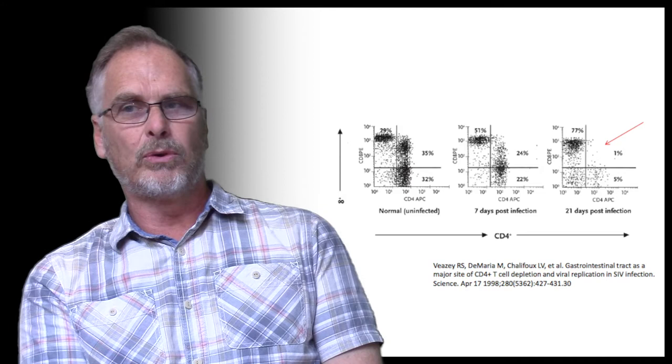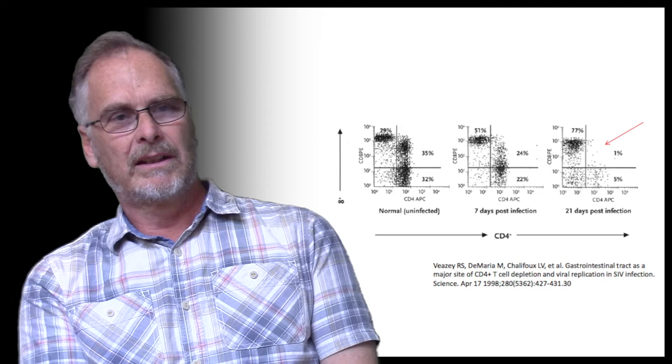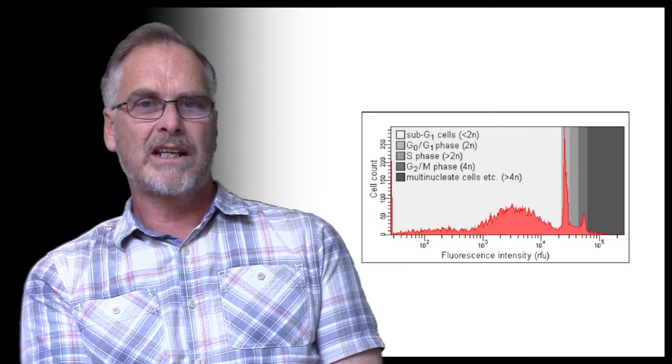We can use it for all sorts of other things like looking at DNA cell cycle. We can look at the calcium flux of a cell, so we can trigger a cell and see that flux within a flow cytometer to tell us how active that cell is to a particular stimulus.